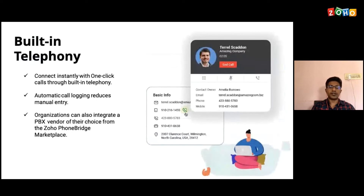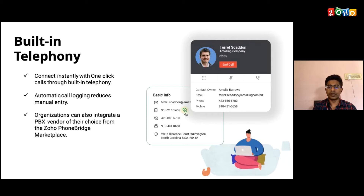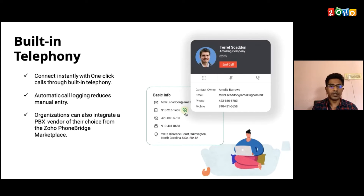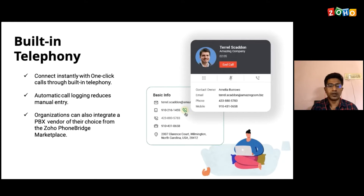Next is built-in telephony. Once you have a prospect in Bigin, the best way of engaging with them is undoubtedly through a telephone conversation. With Bigin, we have integrated a built-in telephony system so that your phone system is connected to Bigin and you can do a click-to-call. Once you have a contact in Bigin, you will see a green icon there once your telephony is integrated, and you can just click on that to call that particular prospect. By default, we have a few in-built integrations with service providers, and you can also integrate with other service providers through the PBX vendor. I'll show you that when we move on to the product demo section.